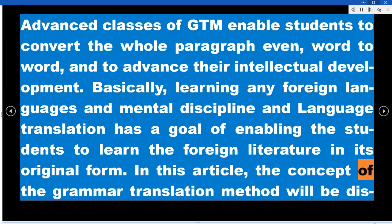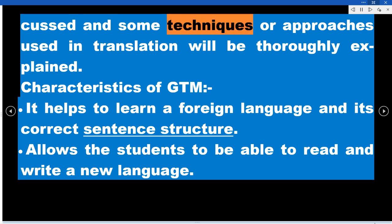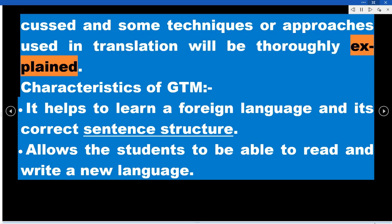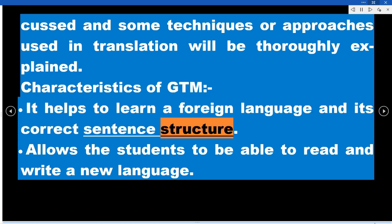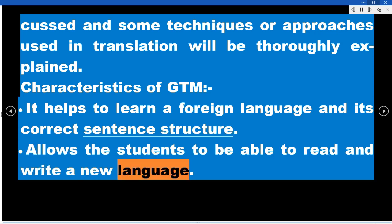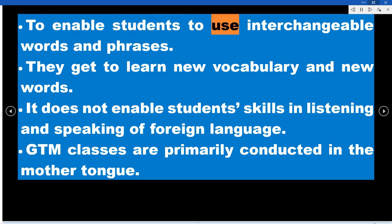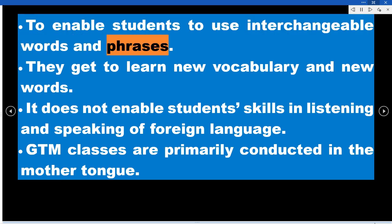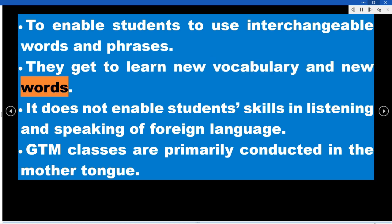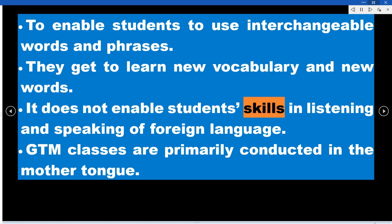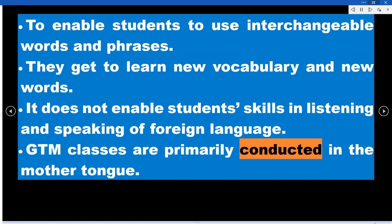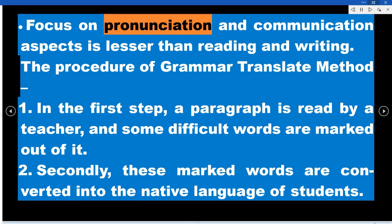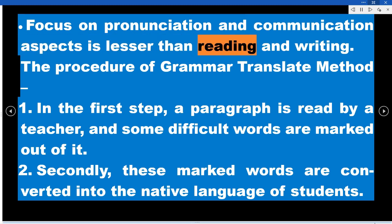In this article, the concept of the grammar translation method will be discussed and some techniques or approaches used in translation will be thoroughly explained. Characteristics of GTM: It helps to learn a foreign language and its correct sentence structure. It allows students to read and write a new language, use interchangeable words and phrases, and learn new vocabulary. However, it does not develop students' skills in listening and speaking. GTM classes are primarily conducted in the mother tongue, with less focus on pronunciation and communication than on reading and writing.